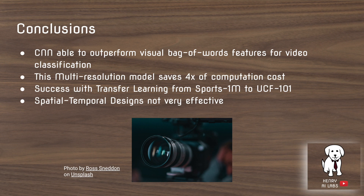In conclusion, the CNN is able to outperform the visual bag-of-words features for video classification. The multi-resolution model — probably the most interesting component of this paper — saves four times the computation cost. They find success with transfer learning from Sports-1 Million to UCF-101. However, the spatial temporal designs aren't very effective relative to one another; the difference between late fusion, early fusion, and slow fusion doesn't seem to be very large.